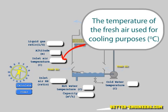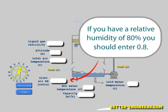Inlet air temperature is the temperature of the fresh air used for cooling purposes. It has to be input in centigrade. Inlet air relative humidity ratio: this value is normally expressed in percentage, but here needs to be input as a ratio.